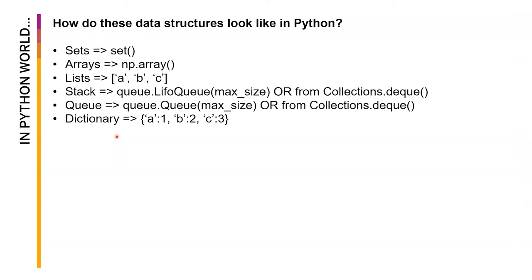Sets are useful if we want to look at unique elements, and you can also use them to count unique elements. Arrays would be much more efficient when it comes to accessing records rather than writing records. Lists would be otherwise — more efficient on writing than reading.